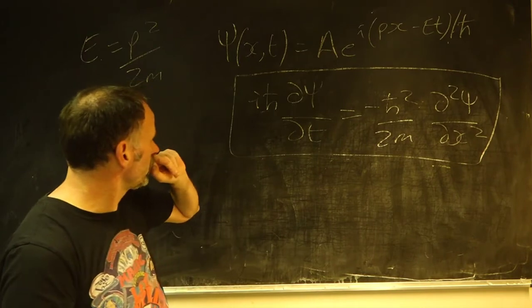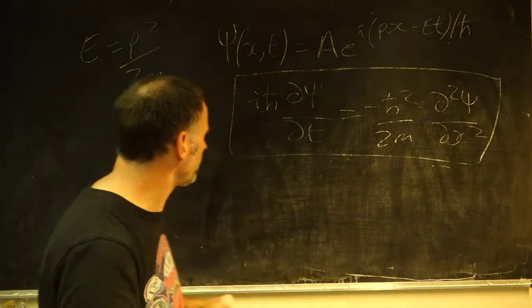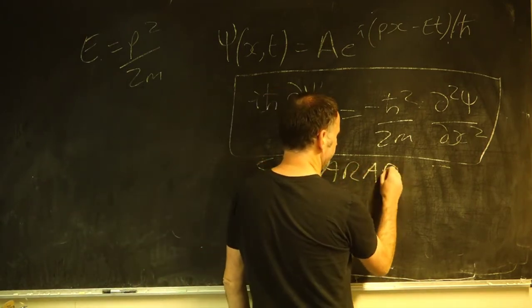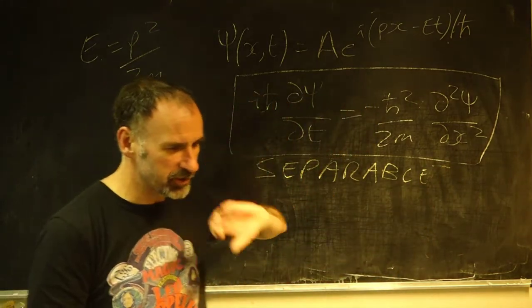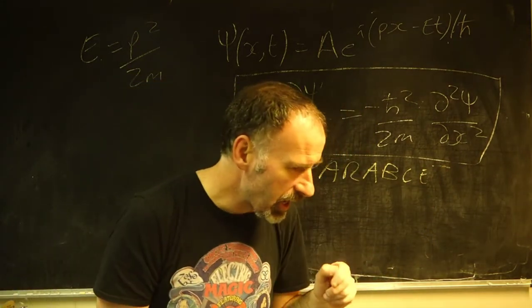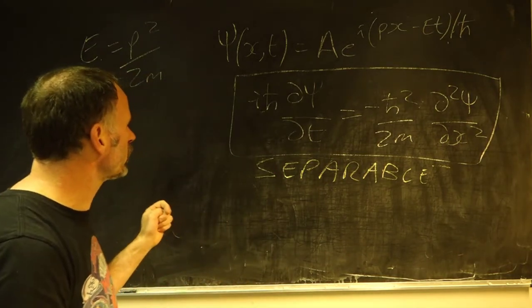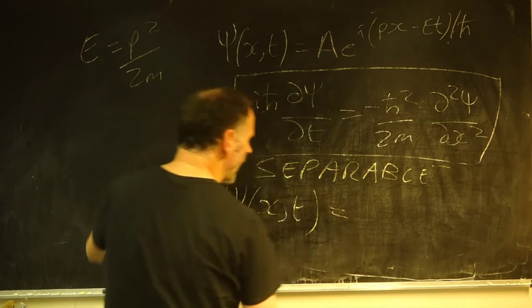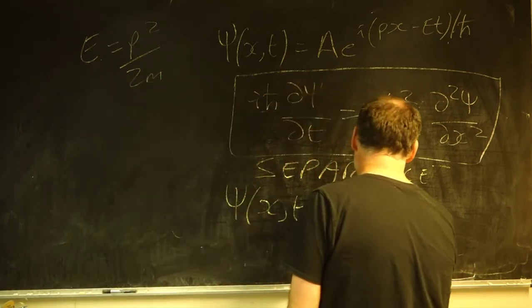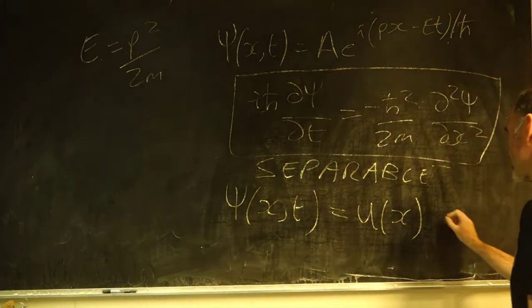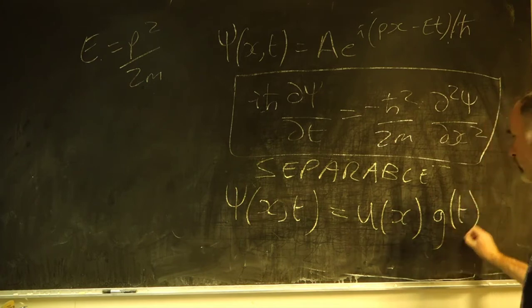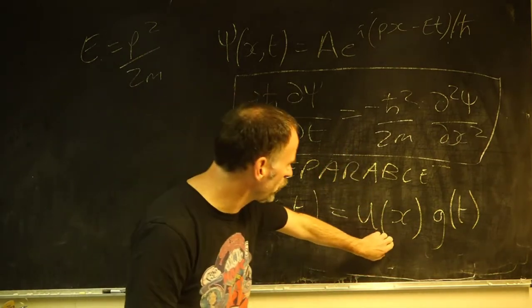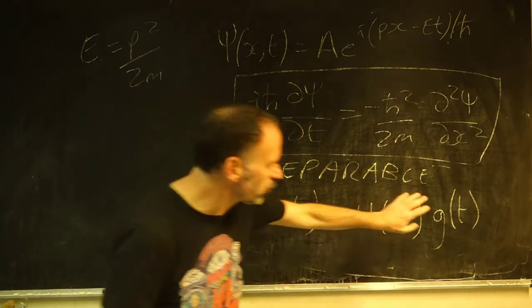So one aspect of this equation that you've come across before, perhaps it hasn't been spelt out like this, but you've come across before, is that it's separable, which means we can disconnect, as it were, the spatial and the time parts, in terms of the differential equations, and write our solution as a product of a function, we call that u(x), and we'll call it g(t), just to maintain consistency with the notes. So our wave function is separable into two parts, one that depends on space and one that depends on time.